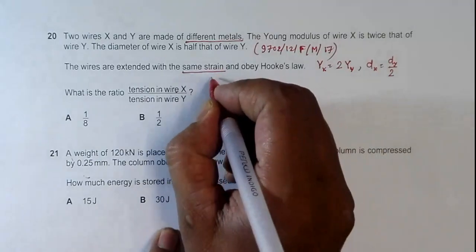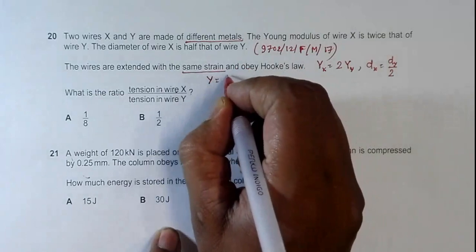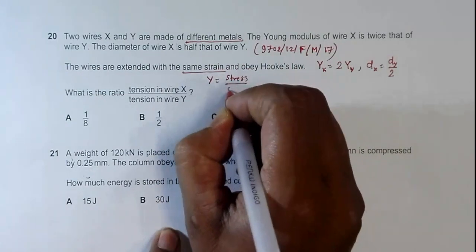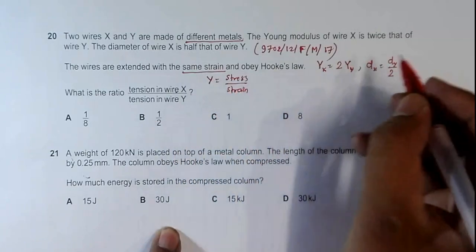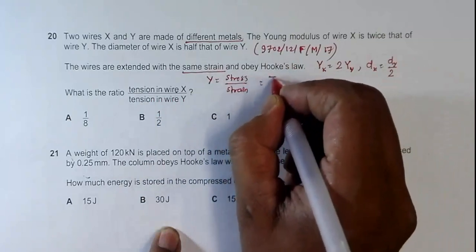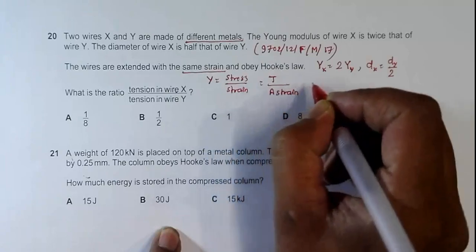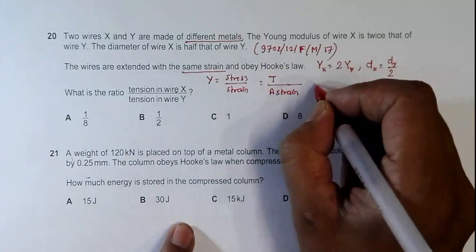Let's first get a formula for the tension. We know that Young's modulus equals stress divided by strain. Since we need to find the tension, stress equals tension force divided by area times strain. Since we are given the diameter, which relates to area...